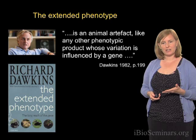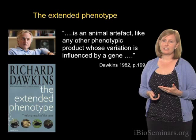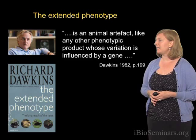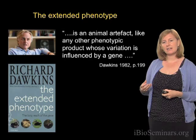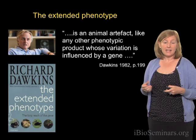This harkens back to what Richard Dawkins referred to as the extended phenotype in a book that he published in 1982. We tend to think of phenotypes as traits sort of within our own skin, or within the skin of an organism. In fact, we can think of phenotypes extended outwards — for example, animal artifacts that can be treated like any other phenotypic product whose variation is influenced by a gene.